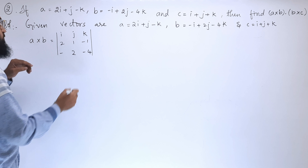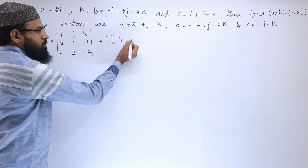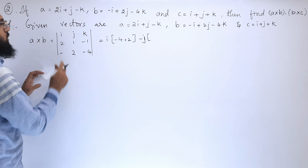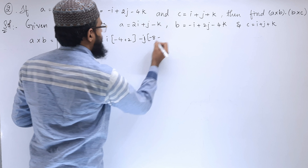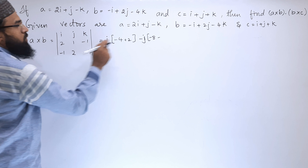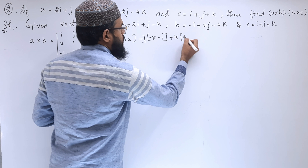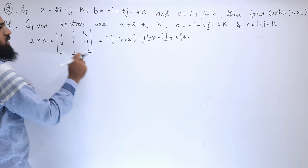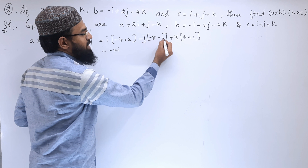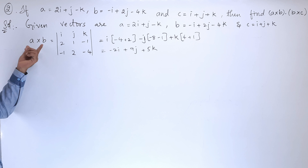Expanding the determinant: i component: (1×-4) - (-1×2) = -4 + 2 = -2. Minus j component: (2×-4) - (-1×-1) = -8 - 1 = -9, so +9j. Plus k component: (2×2) - (1×-1) = 4 + 1 = 5k. So a × b = -2i + 9j + 5k.